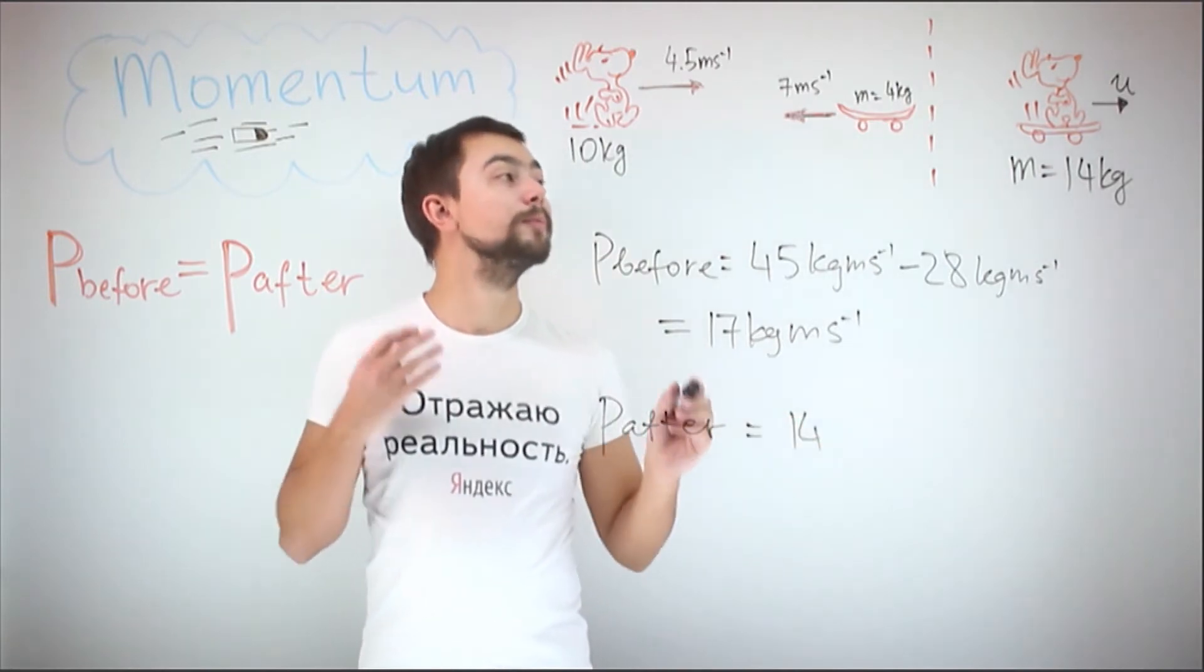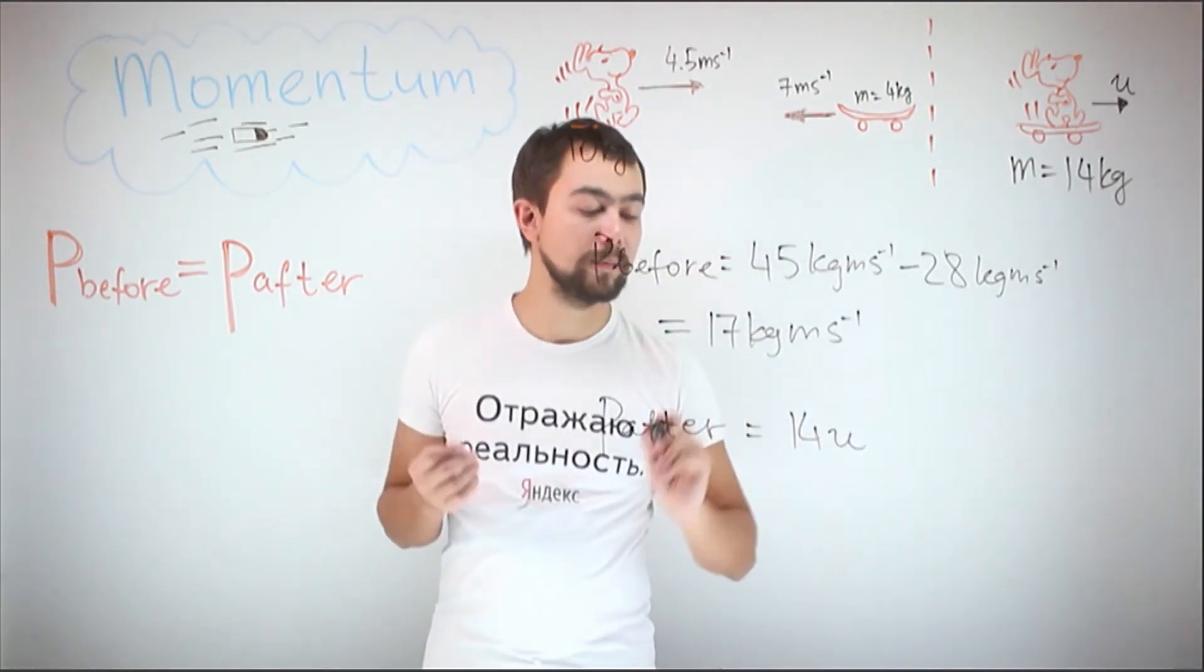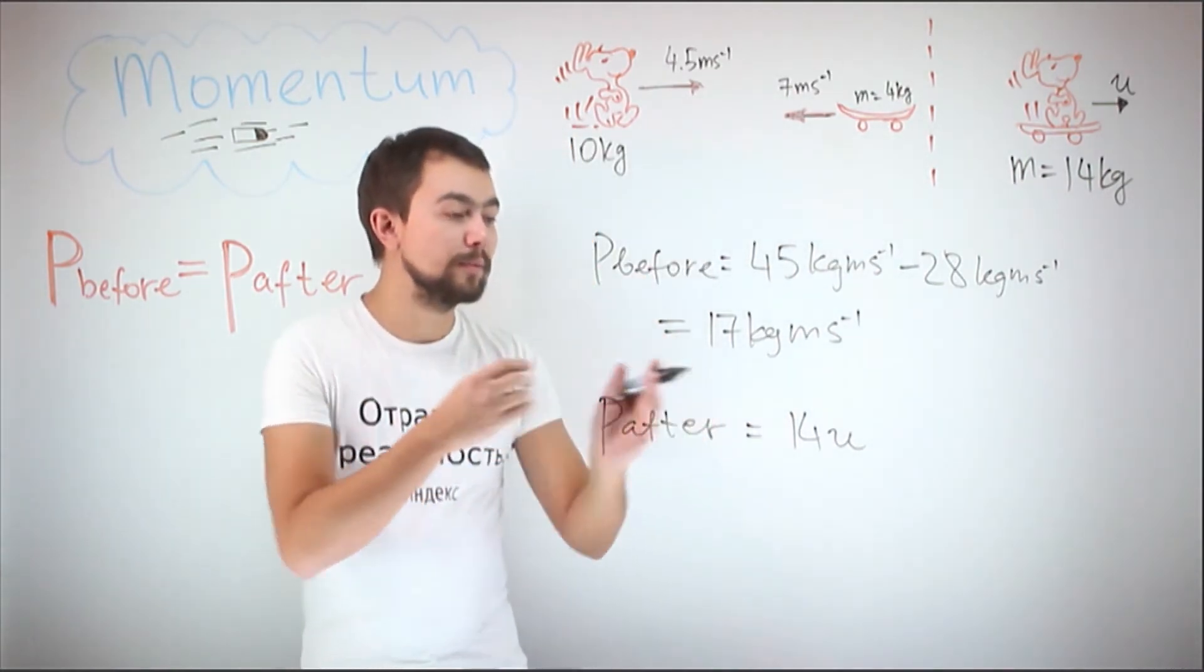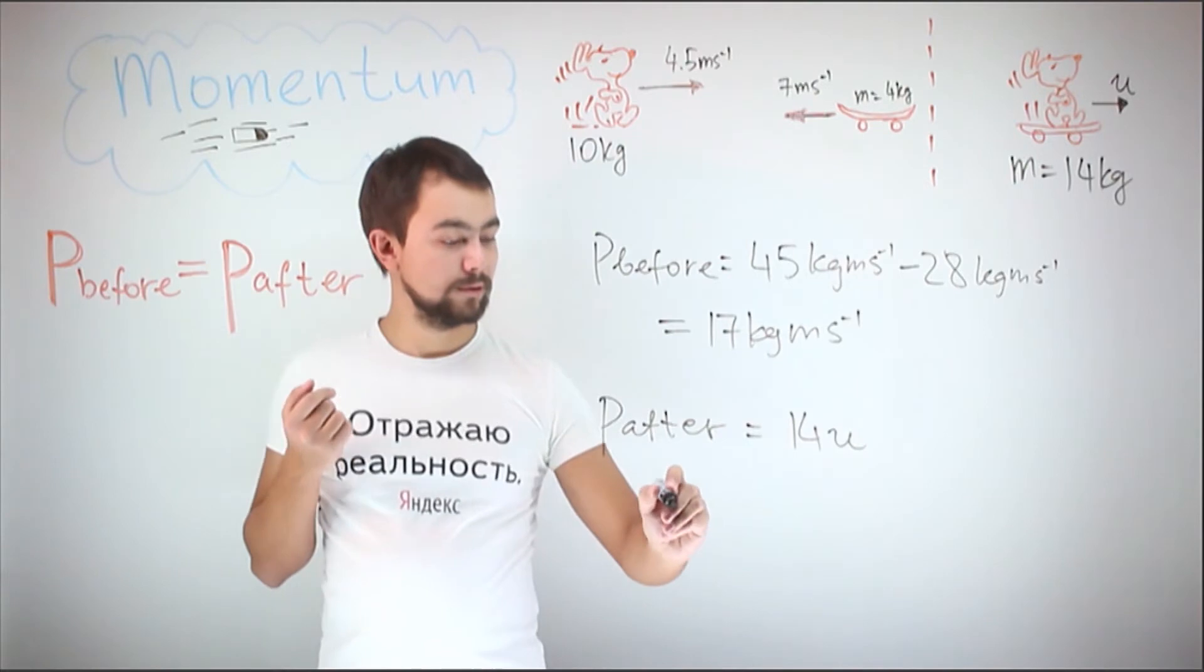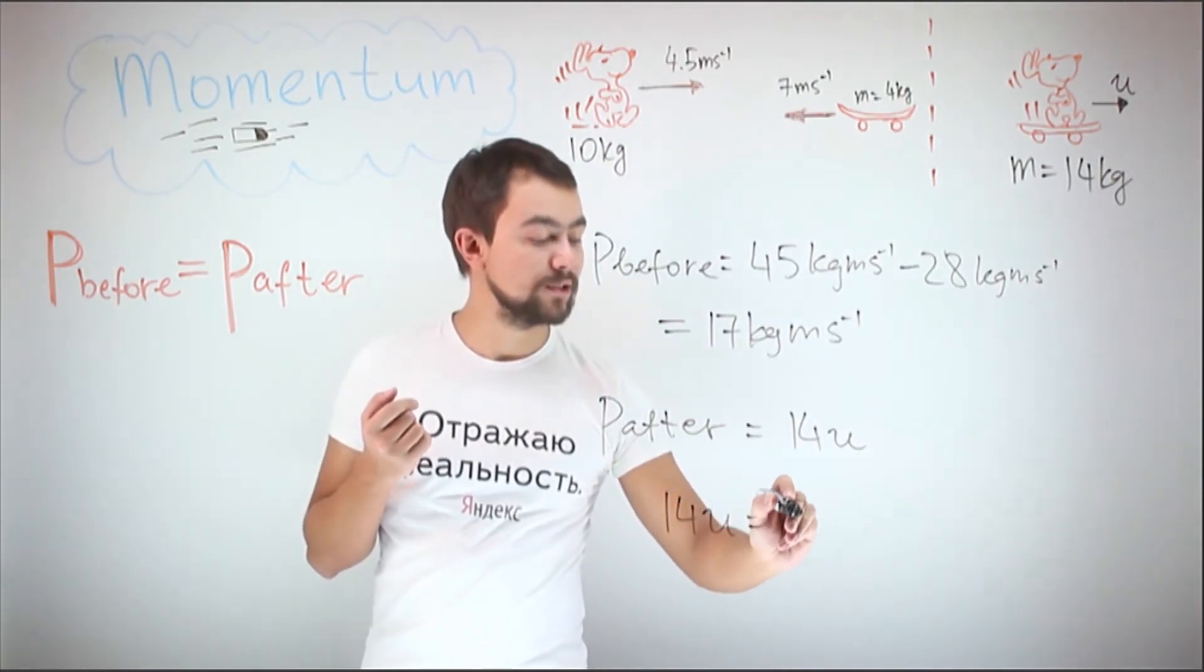So it's 14 multiplied by the velocity, which is U, 14U. Since the momentum before is equal to the momentum after, we can write 14U is equal to 17.